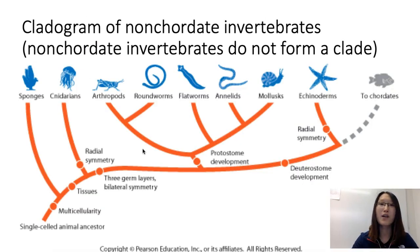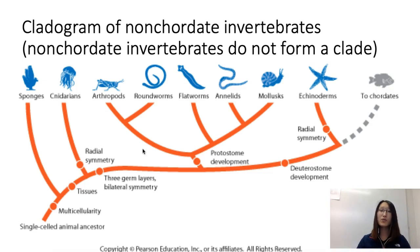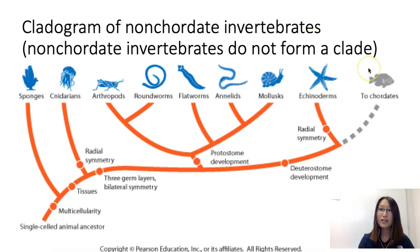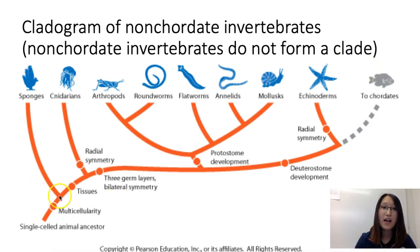Here is a cladogram of the non-chordate invertebrates. Non-chordates are the ones without spines — those are invertebrates — and these organisms do not form a clade. A clade is when a common ancestor and all of its descendants are involved in that group.